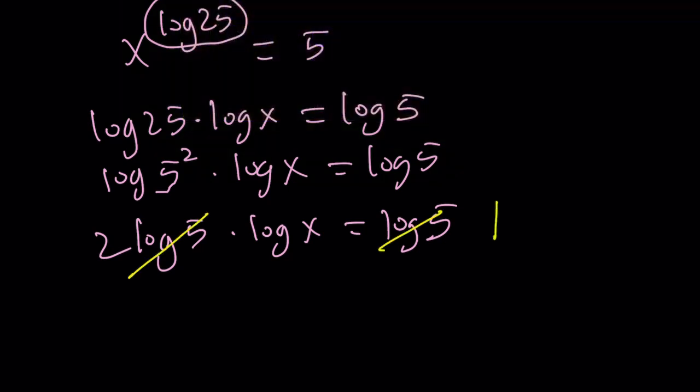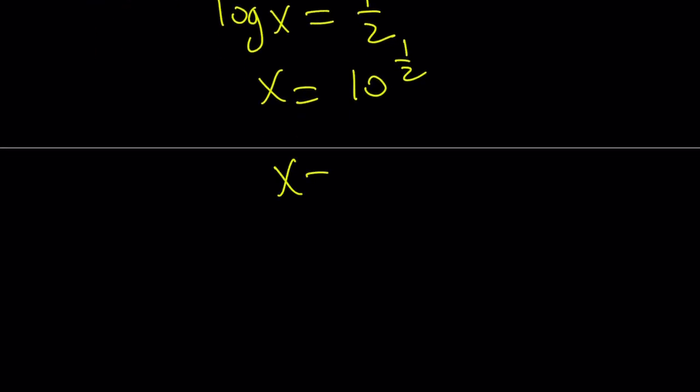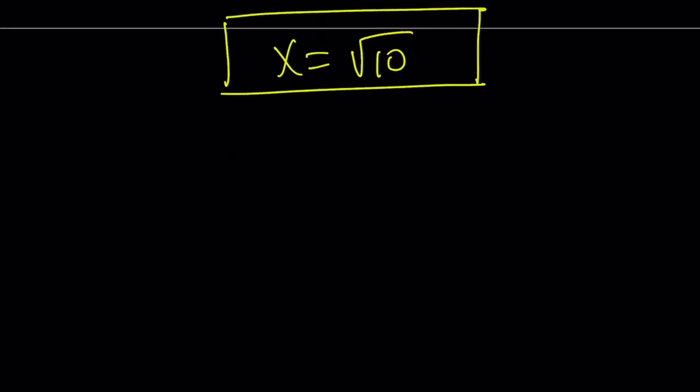Again, it's going to be x equals 10 to the power of 1 half, and that's going to give us square root of 10 as normal. That's what the first method gave us. And this brings us to the end of this video.